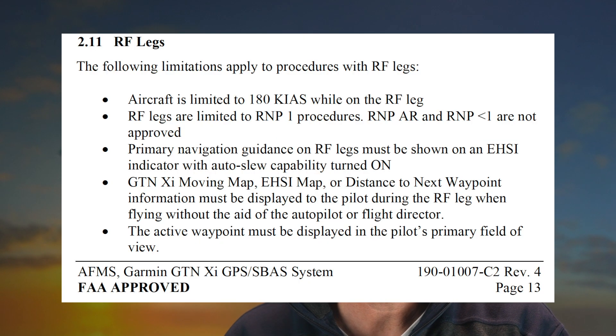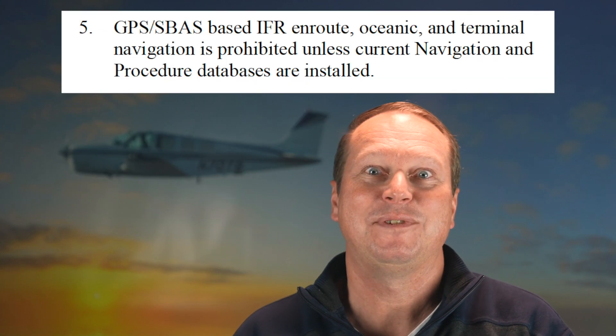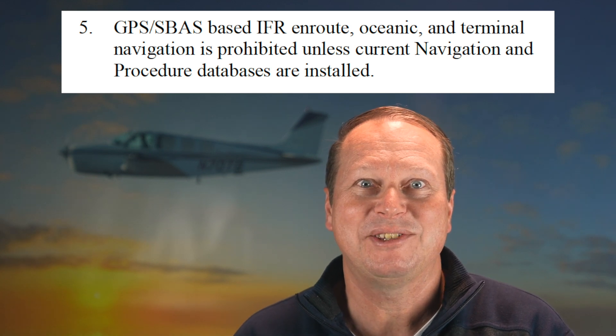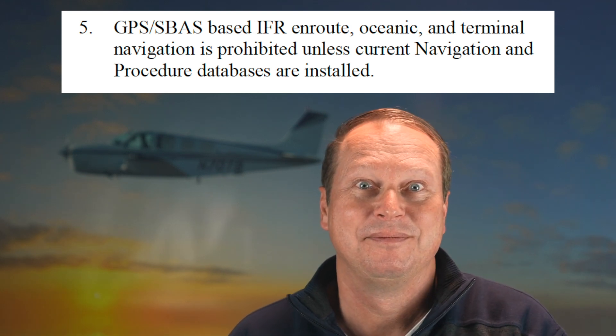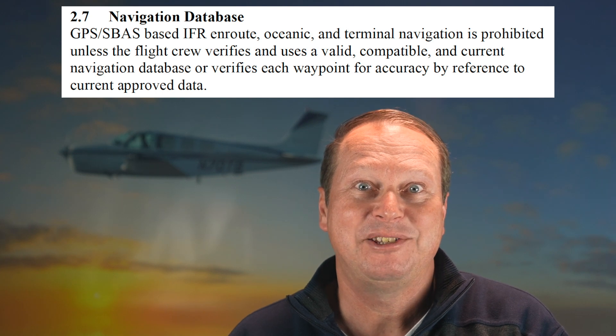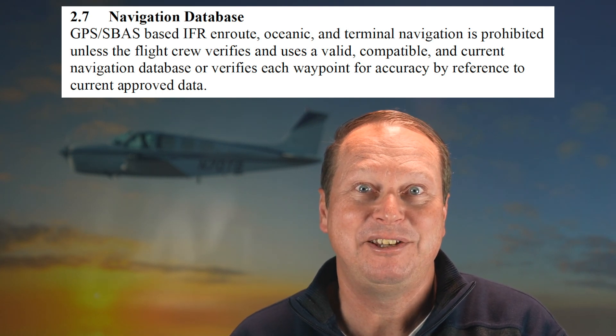Note that the Garmin GTN already allows RF legs on approaches. Database updates are another good example: for IFR navigation, the IFD AFMS says a current database needs to be installed — not an outdated one, not a future one, but the current one. The GTN's AFMS allows pilots to verify each waypoint for accuracy manually if the installed database is not current. STCs for gross weight increase may come with restrictions for flying at that higher weight. Adding tip tanks will come with an AFMS explaining operations of the more complex fuel system, plus limitations for when to use which tank.